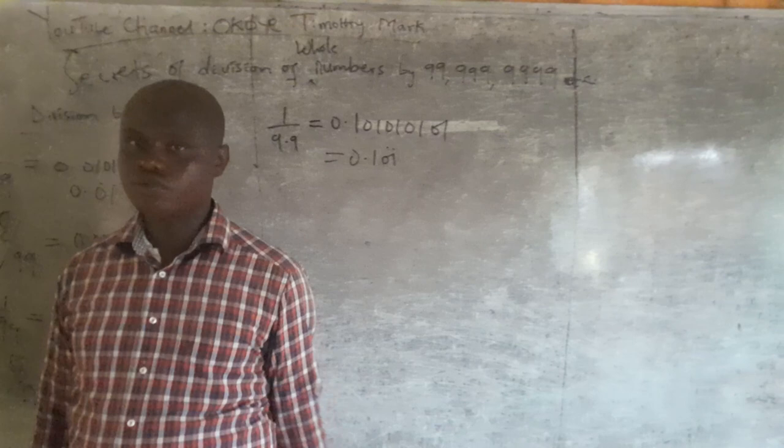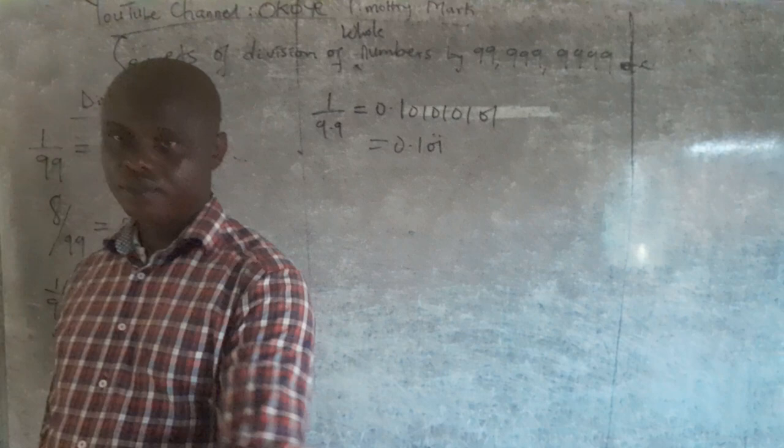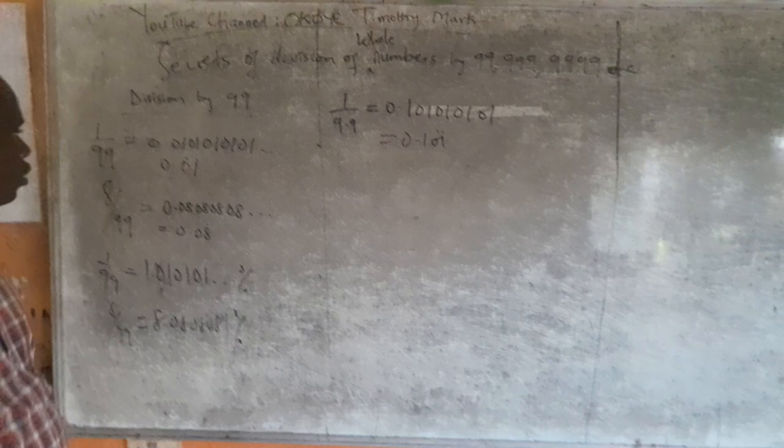The logic is that since 9.9 is 1/10 of 99 — or in other words, 99 is 10 times 9.9 — I will multiply the answer by 10, because whenever a smaller number is dividing, the answer will be bigger. For instance, 1 over 2 is 0.5, but 1 over 5 is 0.2 — 2 is smaller and gives a bigger value; 5 being bigger gives a smaller value.